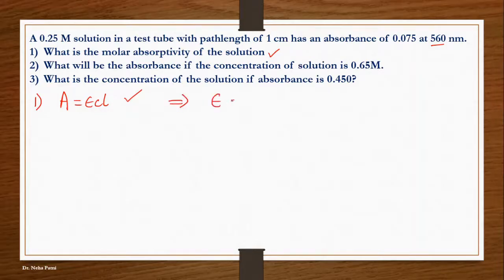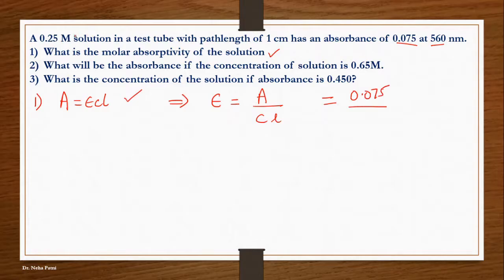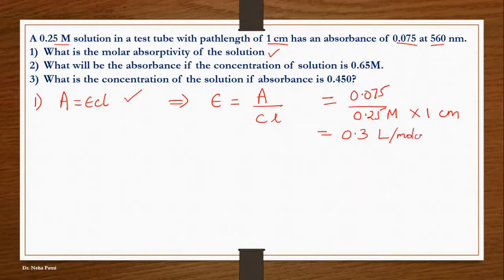To find ε, rearrange to E = A / (C·L), then substitute the values: A = 0.075, C = 0.25 molar, and L = 1 cm. When you solve this you get ε in units of liters per mole per centimeter, which can also be written as M⁻¹ cm⁻¹. Molarity is moles per liter, so both unit forms are equivalent.